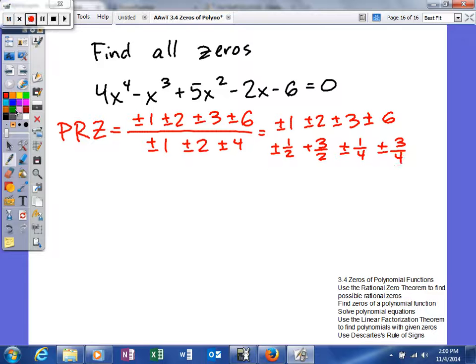And then now we're going to use the Descartes rule of signs. So the number of possible positive zeros. As you can see, this will be one sign change, two sign changes, three sign changes. So we'll get 3 or 1 will be our possibilities.